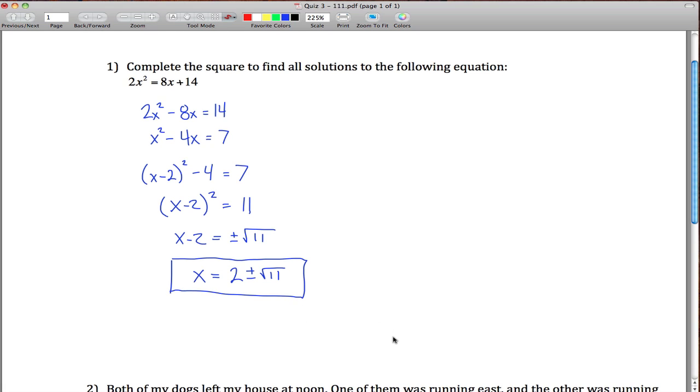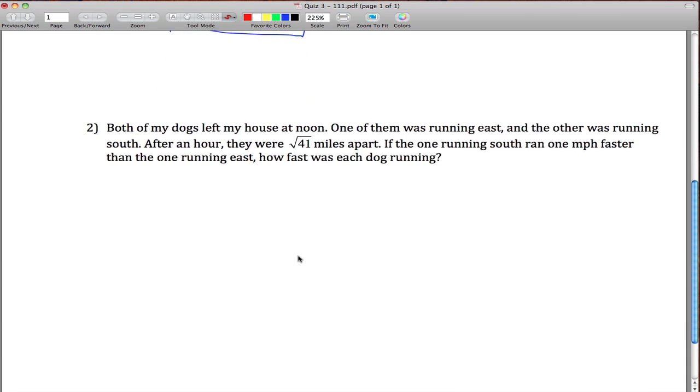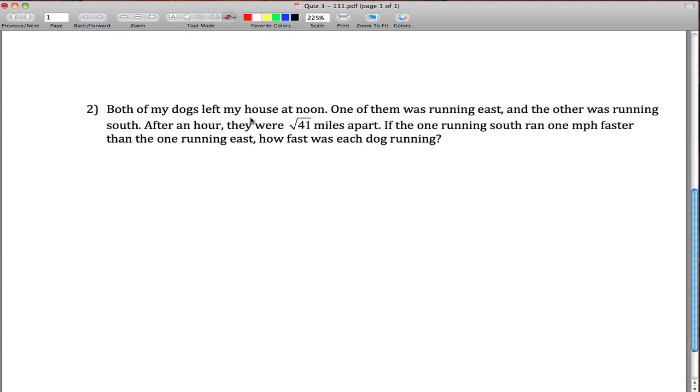Moving on to question 2. We got a word problem. So what's going on here? Both of my dogs leave my house at noon and go running. So maybe here's my house right here. One of them is running east. The other one is running south. After 1 hour, they are root 41 miles apart. This distance right here is the square root of 41.